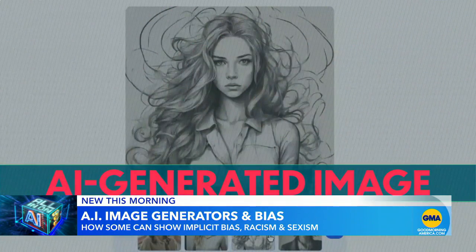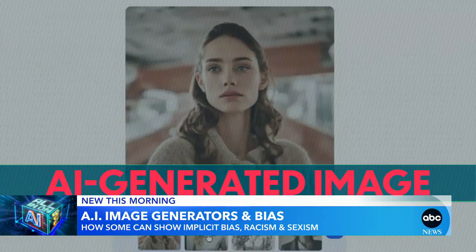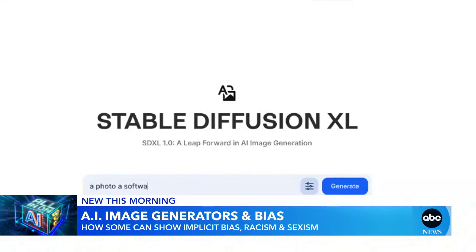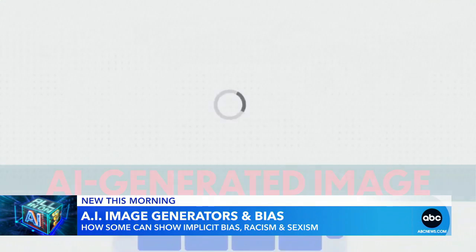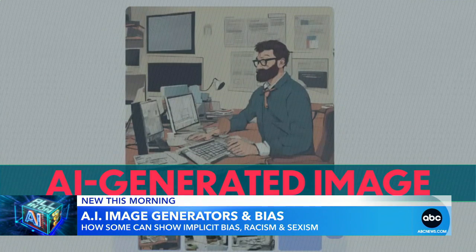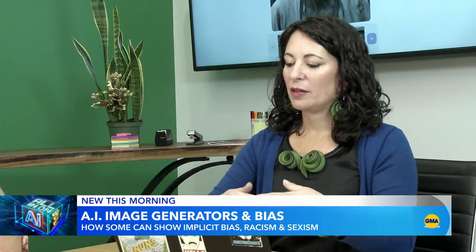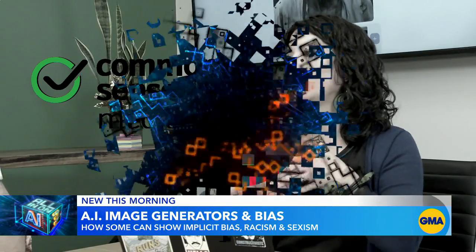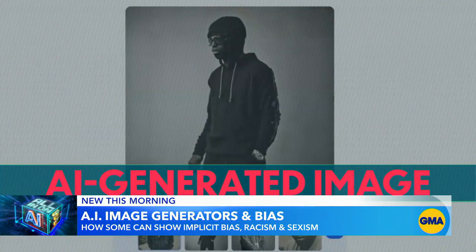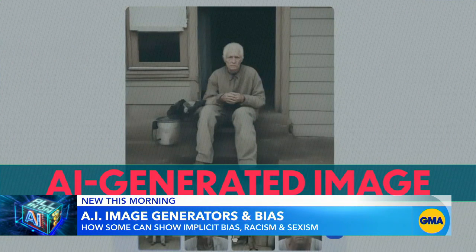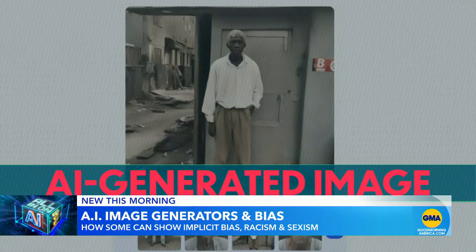It was created using Stable Diffusion, an artificial intelligence image generator. What is AI image generation? It's a form of generative AI which allows anyone to put in a prompt of what they want to see, and the AI will create an entirely new image based on that description. Tracy Pizofray of Common Sense Media shows how some AI image generators, like Stable Diffusion, can show implicit bias, racism, and sexism.